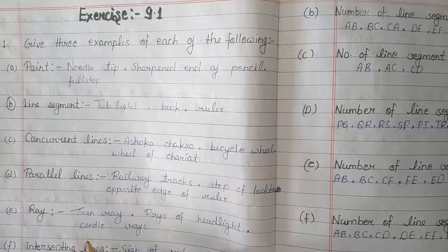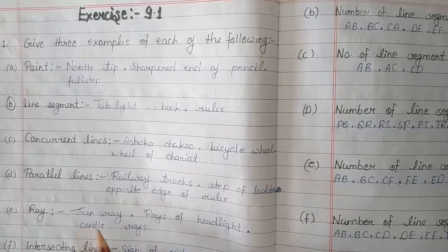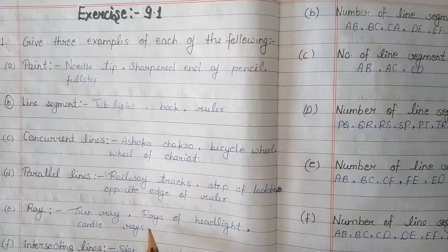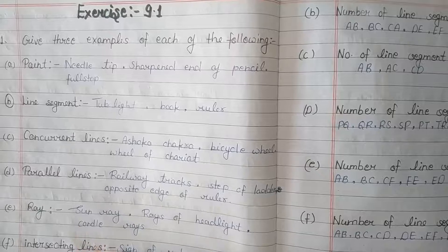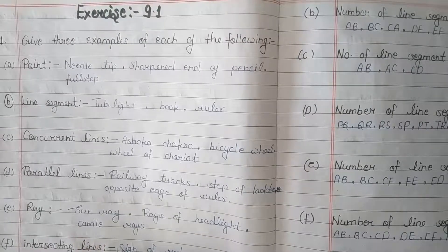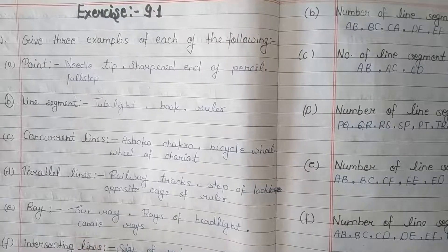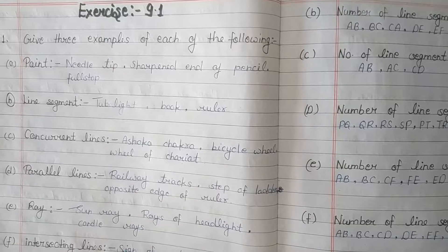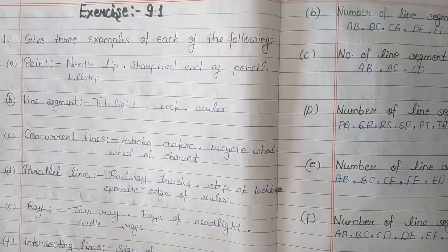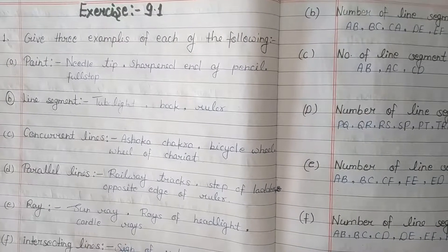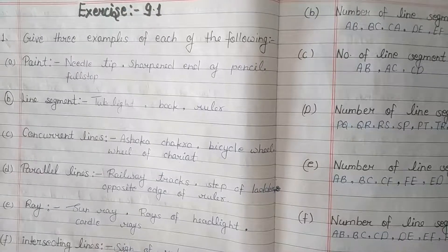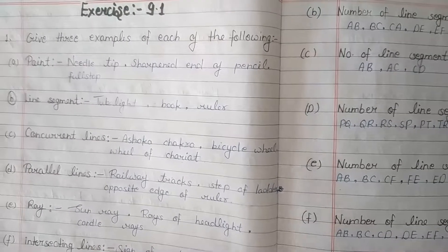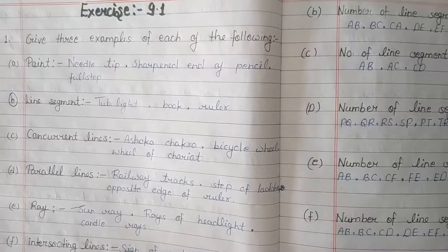E - Ray. First example: sunray. Second: rays of headlight. Third: candle rays. F - Intersecting lines. First example: sign of road cross. Second: crossing road. Third: scissors.